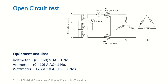First is the open circuit test. The connections are done on the LV side and the HV side is open-circuited. The voltmeter is connected to the LV side and has to read the rated voltage, that is 115 volt. So the range of 0–125 volt or 0–150 volt can be chosen, depending on the availability.